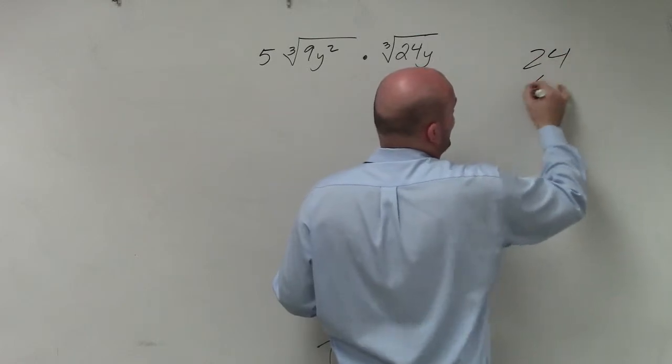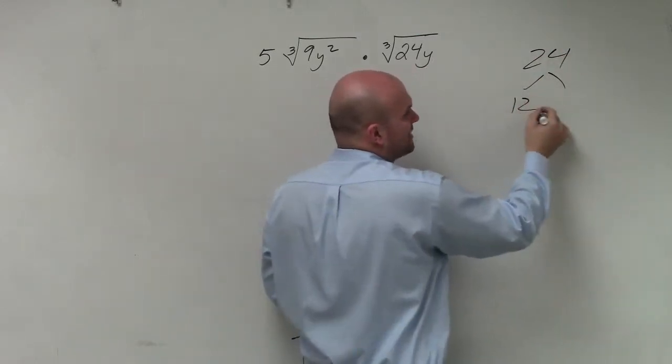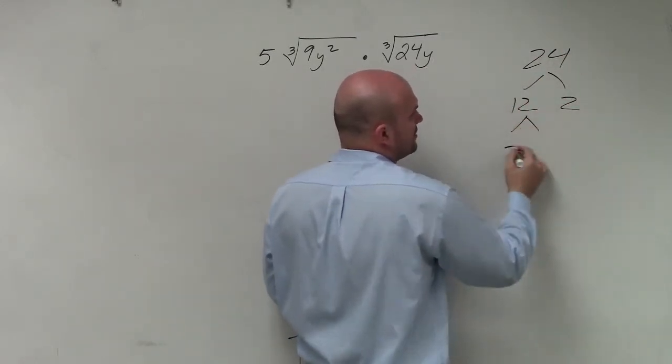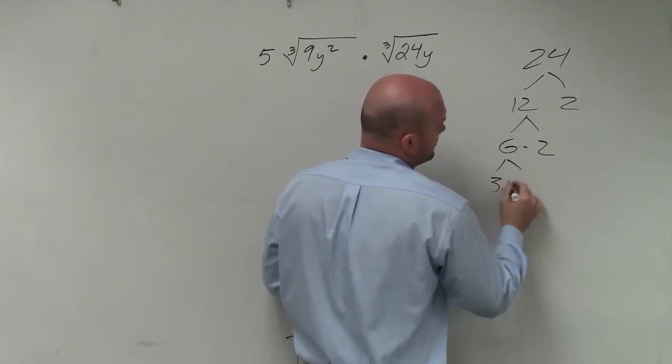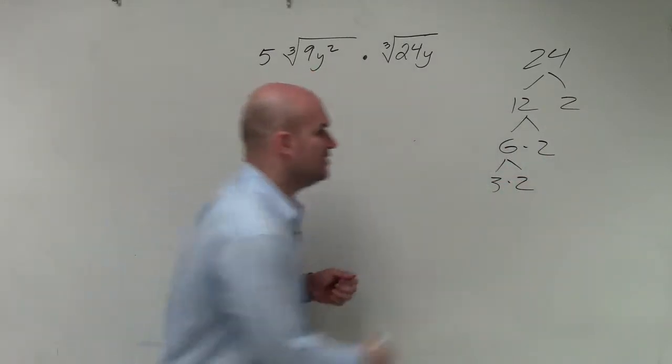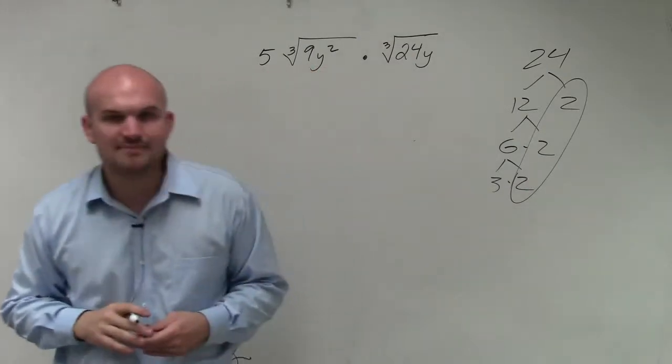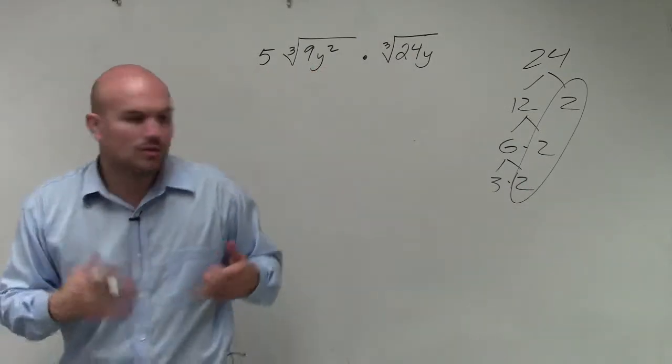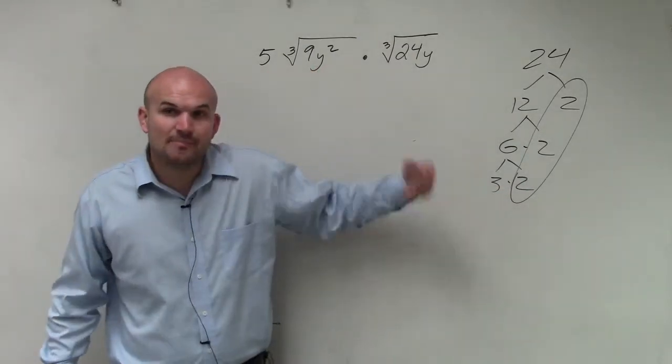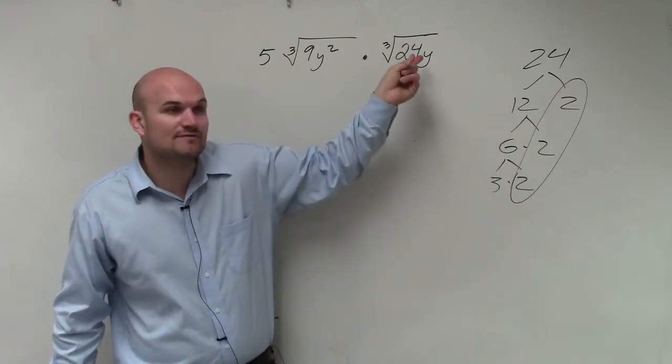So if I factor 24, I do 12 times 2, 6 times 2, 3 times 2. So what I notice is really I'm multiplying 2 times 2 times 2. So I still have a 3 left over, but I can simplify the cube root of 24.